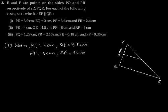R, this is E and F. PE is 4, QE is 4.5, PF is 8 and RF is 9 cm.